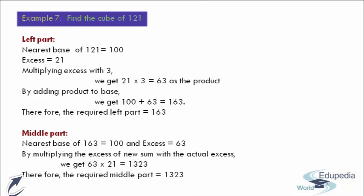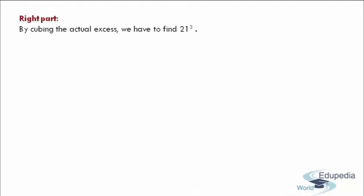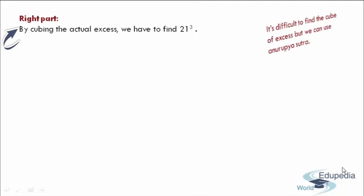After completing the process of the middle part and moving to the process of the right part, the first and last step is we have to cube the actual excess, which is 21. But the excess is a two-digit number, and to find its cube it becomes a bit difficult. So to get rid of this difficulty, I am going to use Anurupia Sutra.